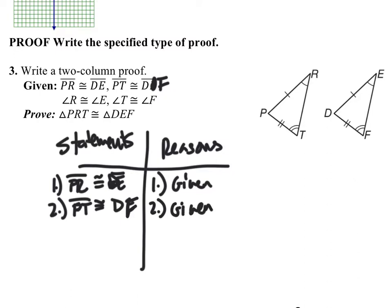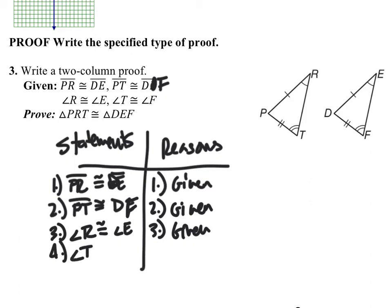We also know that angle R is congruent to angle E, and that's also given. And then we know that angle T is congruent to angle F, and that's also given.